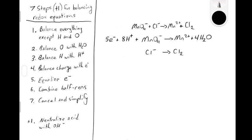Now we turn our attention to the other half reaction. We start by balancing everything except hydrogen and oxygen — in this case, chlorine. There are two chlorines on the product side and one on the reactant side, so we balance by inspection, giving two chlorines on either side. The next step is to balance oxygen with water — there are no oxygens, so we do not need to add water. The same is true for balancing hydrogens with H⁺: no hydrogens, therefore no H⁺. The final step is to balance charge with electrons. There are two negatives on the reactant side and no charge on the product side, so we add two electrons to the product side. Now we have two balanced half reactions.